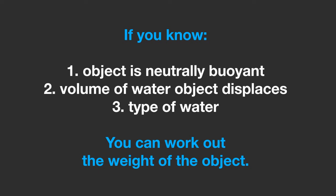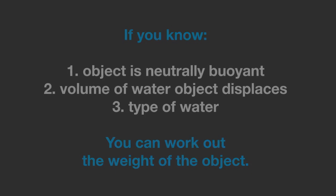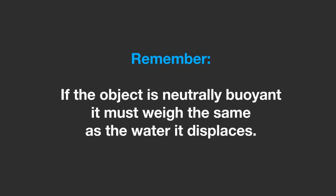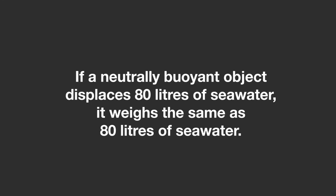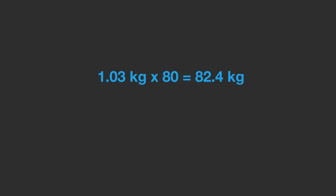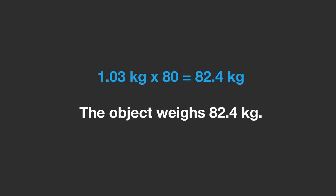By the same logic, if you know an object is neutrally buoyant and you know the volume of water it displaces and what type of water it is in, you can work out how much the object weighs. A neutrally buoyant object must weigh the same as the water it displaces. So if a neutrally buoyant object displaces 80 liters of seawater, it must weigh the same as 80 liters of seawater. Each liter weighs 1.03 kg, so 1.03 multiplied by 80 equals 82.4 kg — the object weighs 82.4 kg.